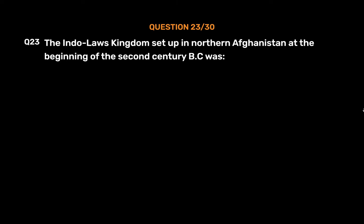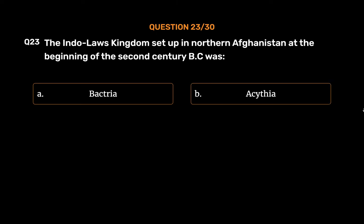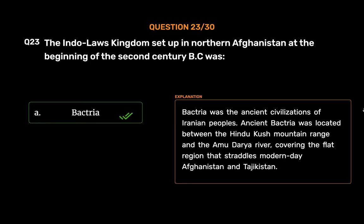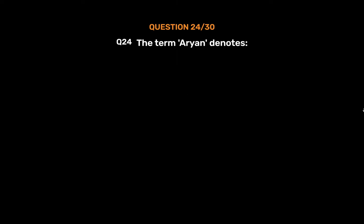Question number twenty-three: The Indo-Greek kingdom set up in northern Afghanistan at the beginning of the second century BC was — Option A: Bactria, Option B: Asidia, Option C: Zedrasia, Option D: Aria. The correct answer is Option A, Bactria. Bactria was an ancient civilization of Iranian peoples; ancient Bactria was located between the Hindu Kush mountain range on the Amu Darya river, covering the flat region that straddles modern-day Afghanistan and Tajikistan.